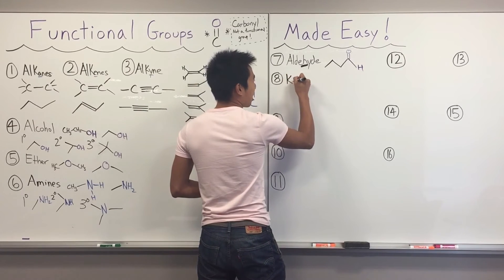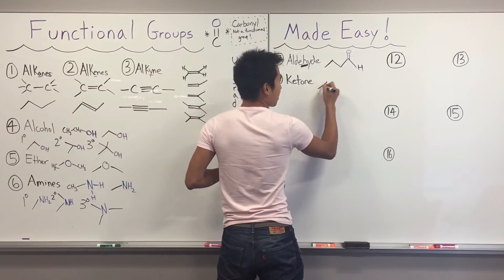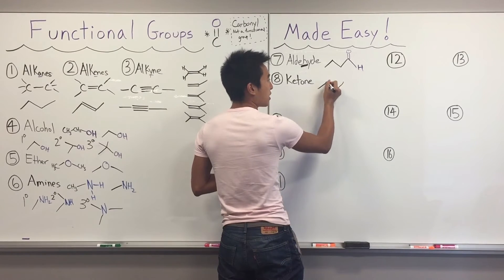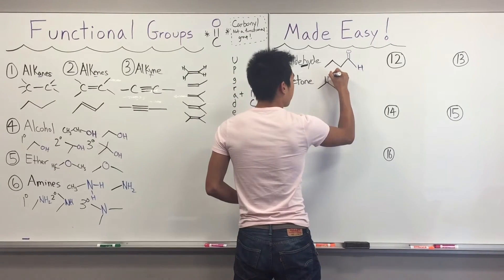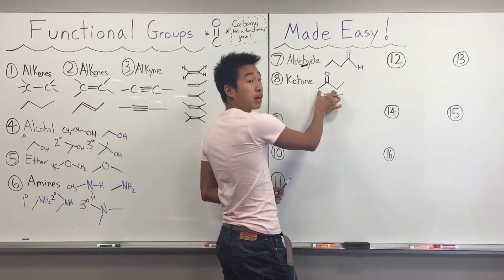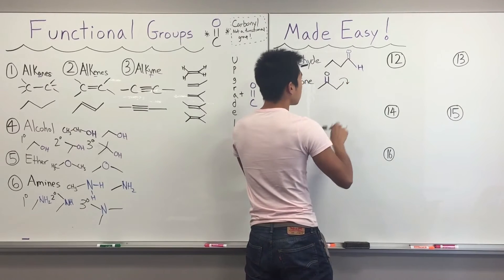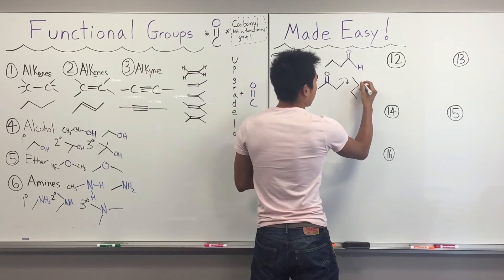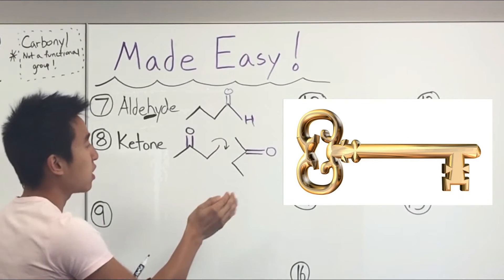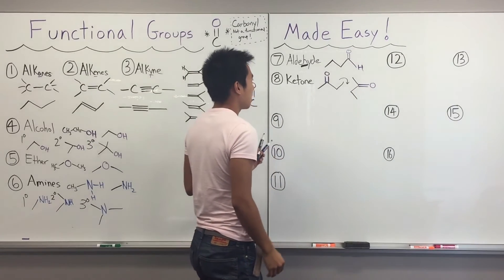Next is ketones — the functional group I forgot in version 1.0. Take an alkane, but this time instead of upgrading the last carbon, upgrade one of the carbons in the center of the chain — one that's not at the end. That gives you a carbonyl with carbons on either side of the carbonyl carbon. If you rotate that structure, it kind of looks like a key — that's how I remember ketone: key, ketone.